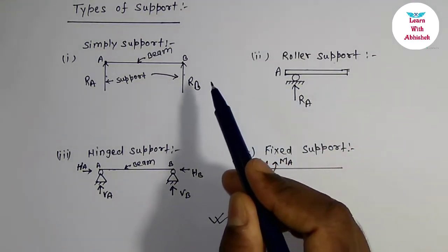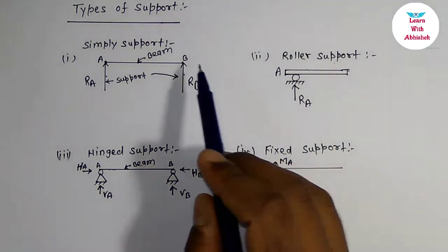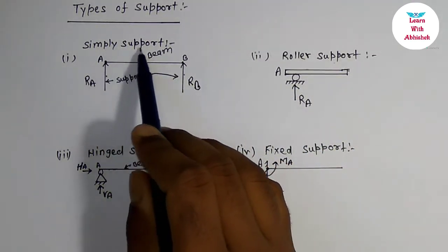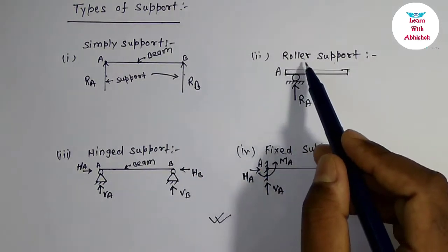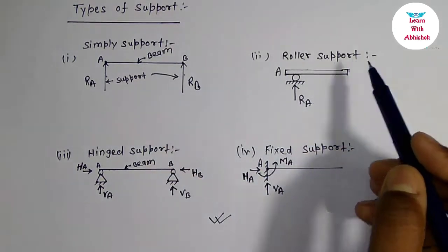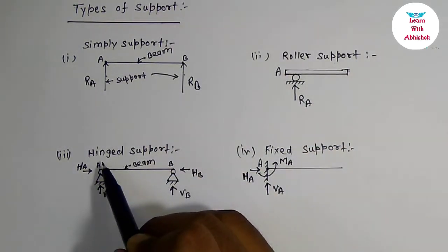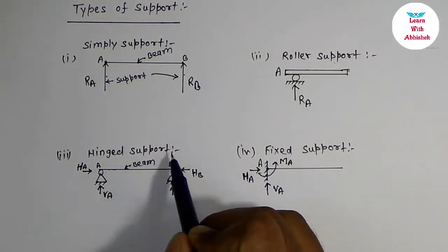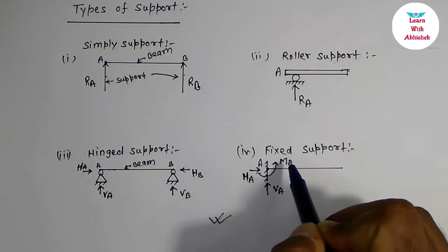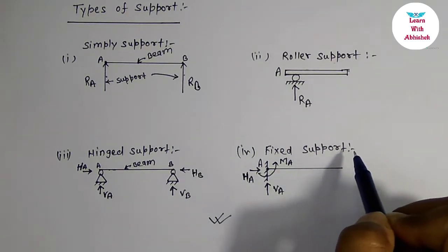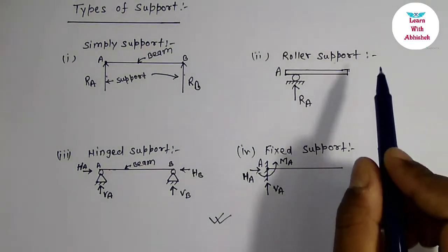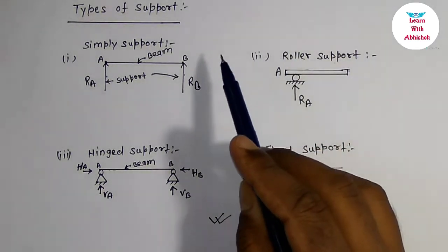So here we see that there are four types of support. One is simply support, second is roller support, third is hinge support, and fourth is fixed support. We will discuss one by one.